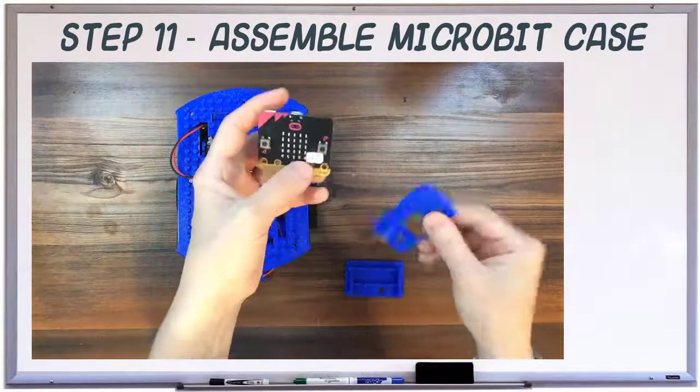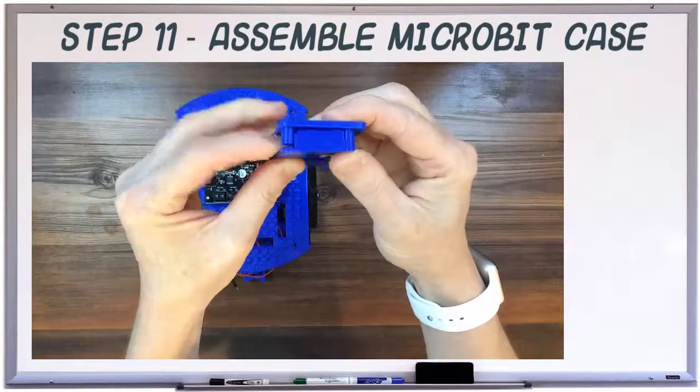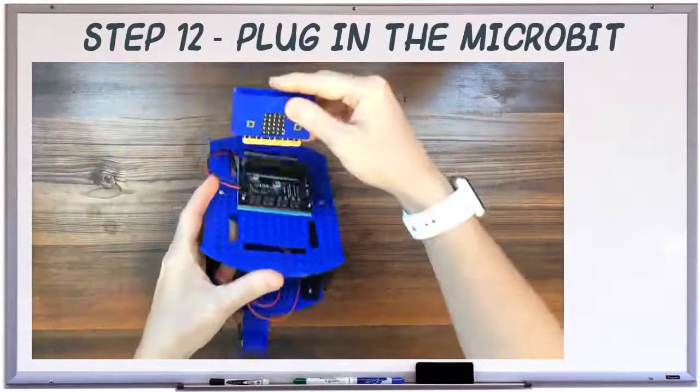Next, place the face of the microbit case onto the microbit. Snap it onto the back with tinkerpie.com toward the bottom of the microbit. Plug the microbit into the motor board.